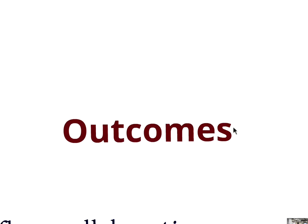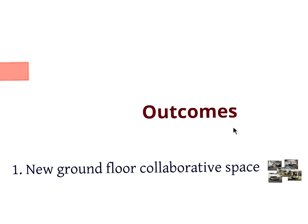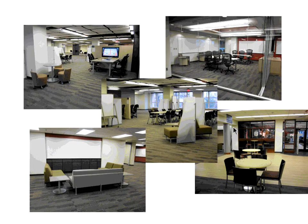Now I'll briefly talk about outcomes. The new ground-floor collaborative space is the most recently important outcome of this kind of work. This open, configurable combination of whiteboards with screens and comfortable furniture was instantly one of the most popular places in the library when it opened. Its proximity to the café is part of it, but students could also come in and program the space the way they need it to be — it has both the furniture and the technology they need for their academic work.